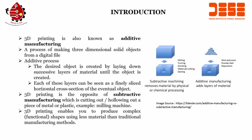In additive processes, the desired object is created by laying down successive layers of material until the object is complete. The object is created layer by layer — horizontally or vertically. Each of these layers can be seen as a finely sliced horizontal cross section. While 3D printing is the opposite of subtractive manufacturing, where you cut or hollow out a piece of metal or plastic, 3D printing enables you to produce complex functional shapes using less material than traditional manufacturing methods. That is the key advantage — less material consumption for making complex shapes.